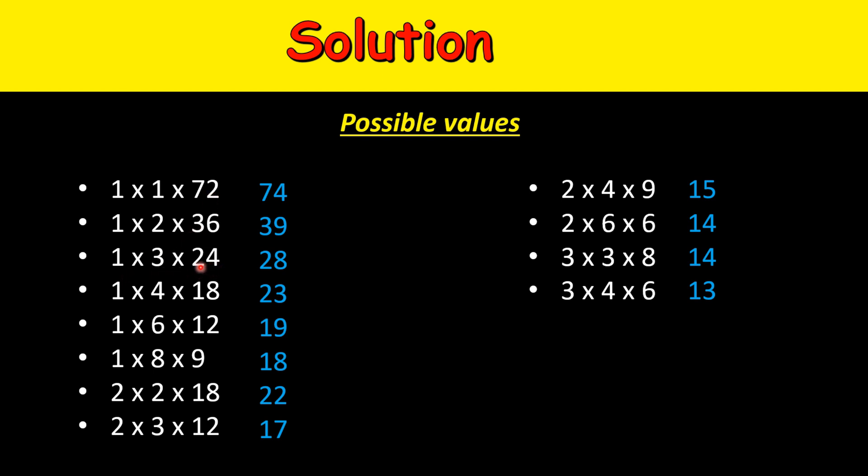The order does not matter. 1 multiplied by 3 multiplied by 24 is the same as 24, 3, 1 or 3, 1, 24. The order is not important, so these two hints are not enough.